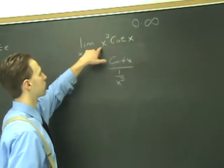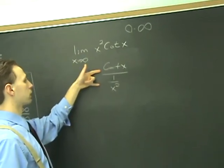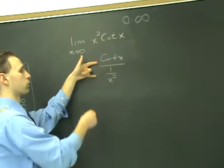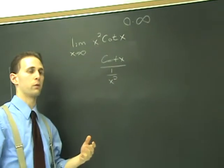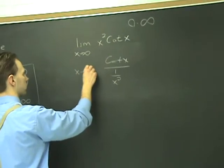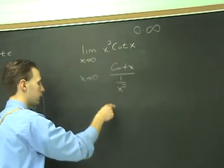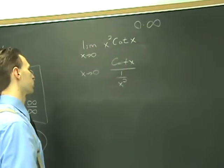You rewrite it as cot(x) divided by one over x². And now because you had zero times infinity, when you flip one of them, you're automatically going to have either zero over zero or infinity over infinity with this kind of situation. In here, when you try to do it again, x goes to zero, it turns out we have infinity over infinity. So we can just apply L'Hôpital's rule directly.